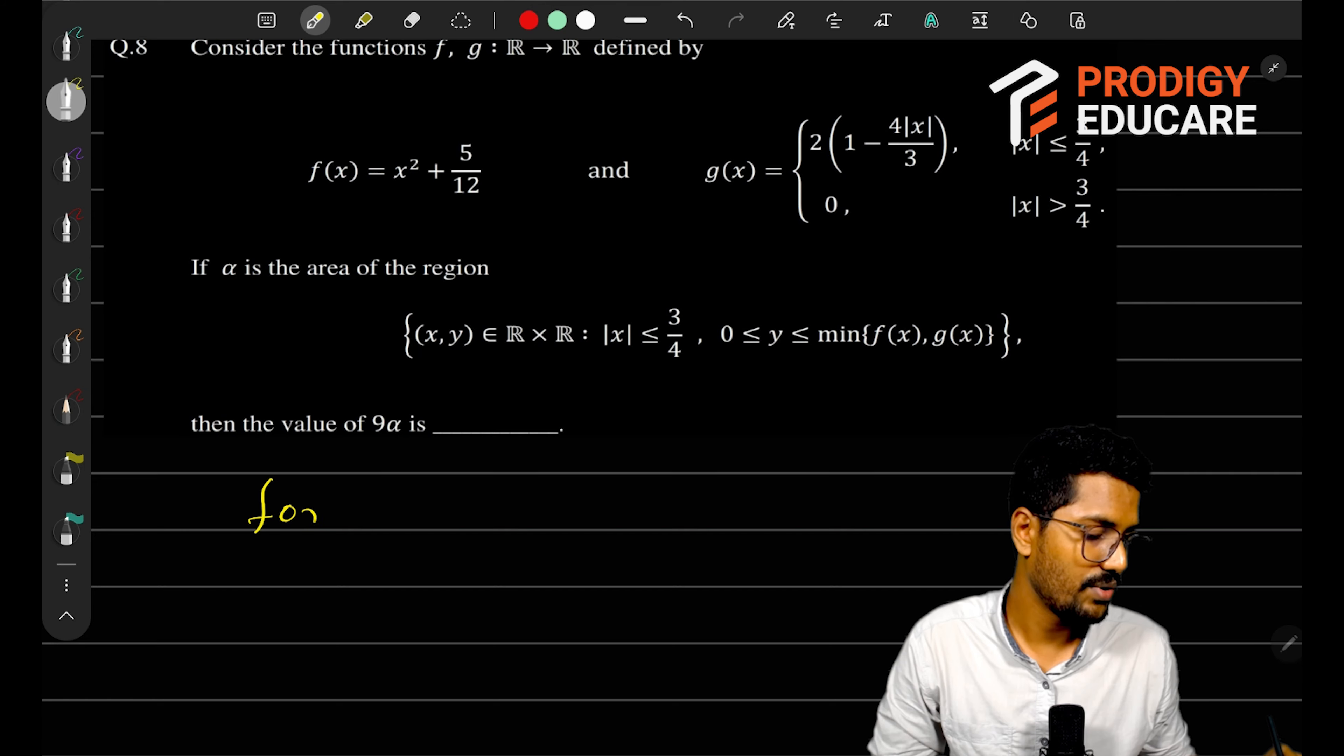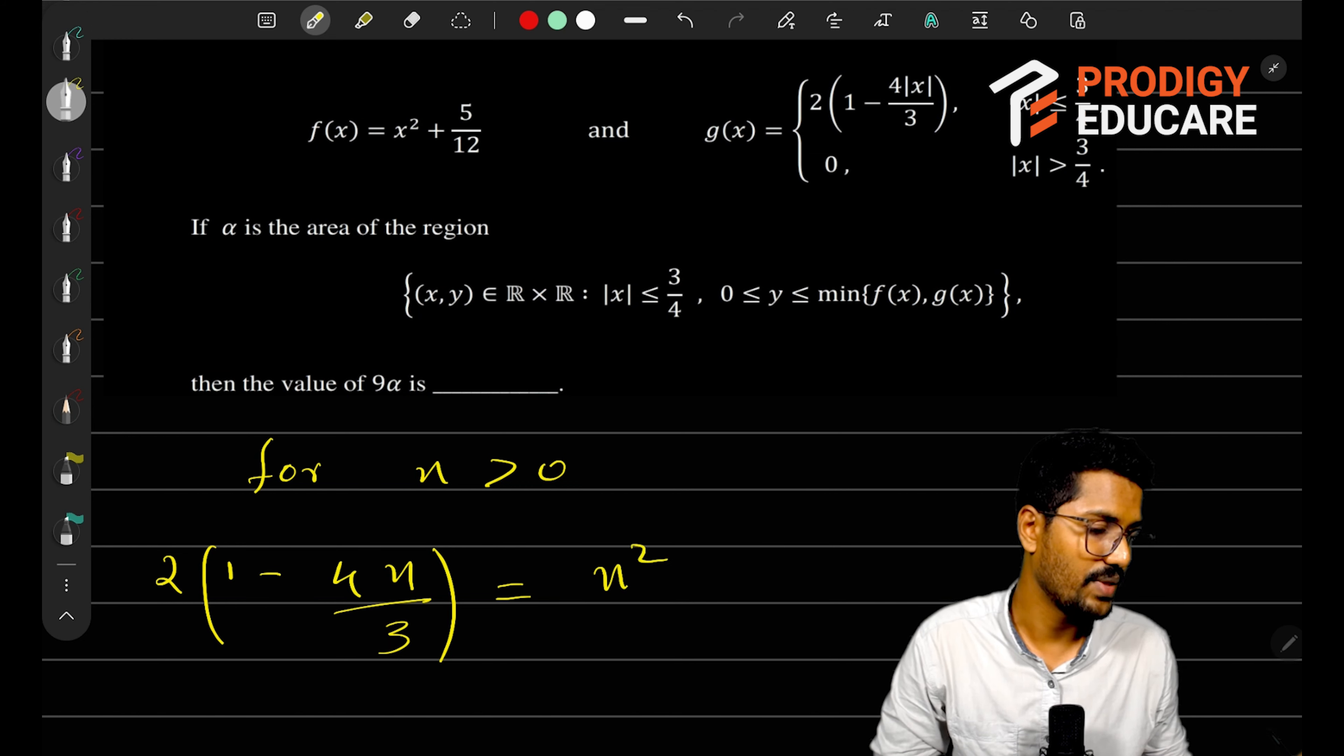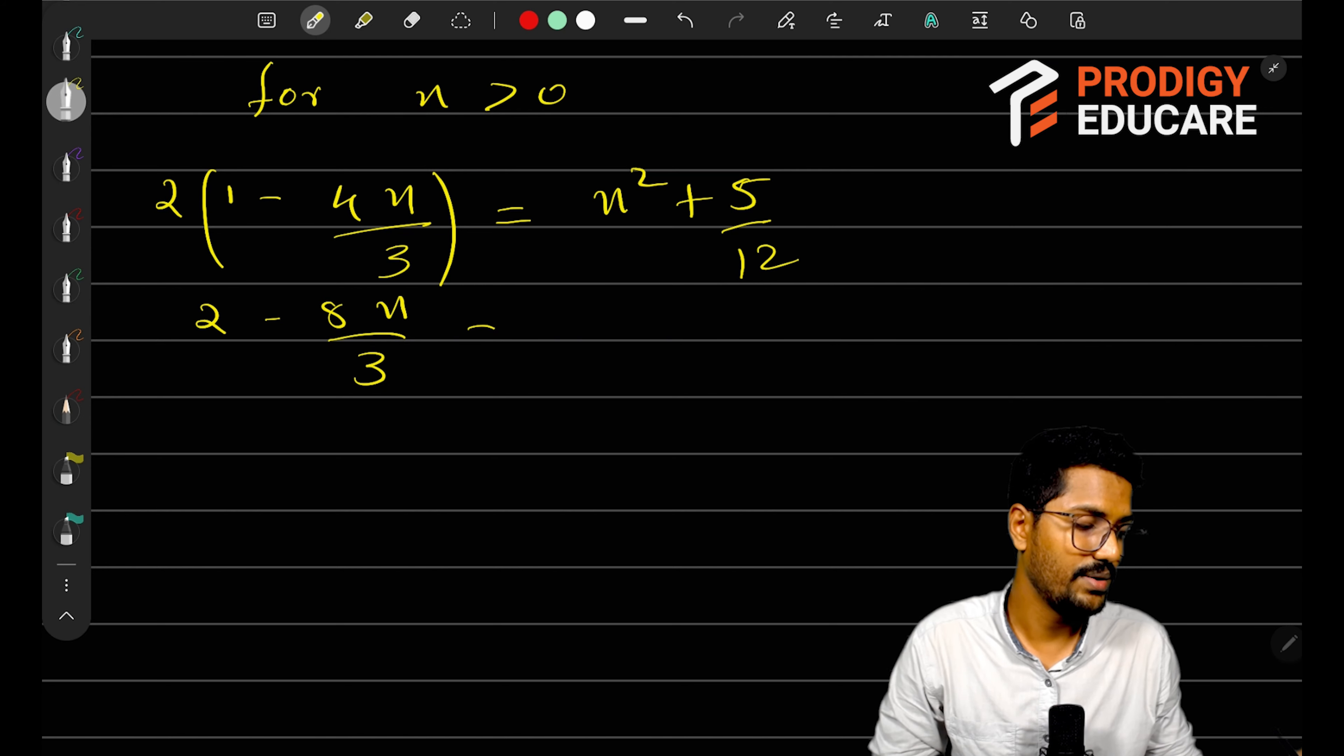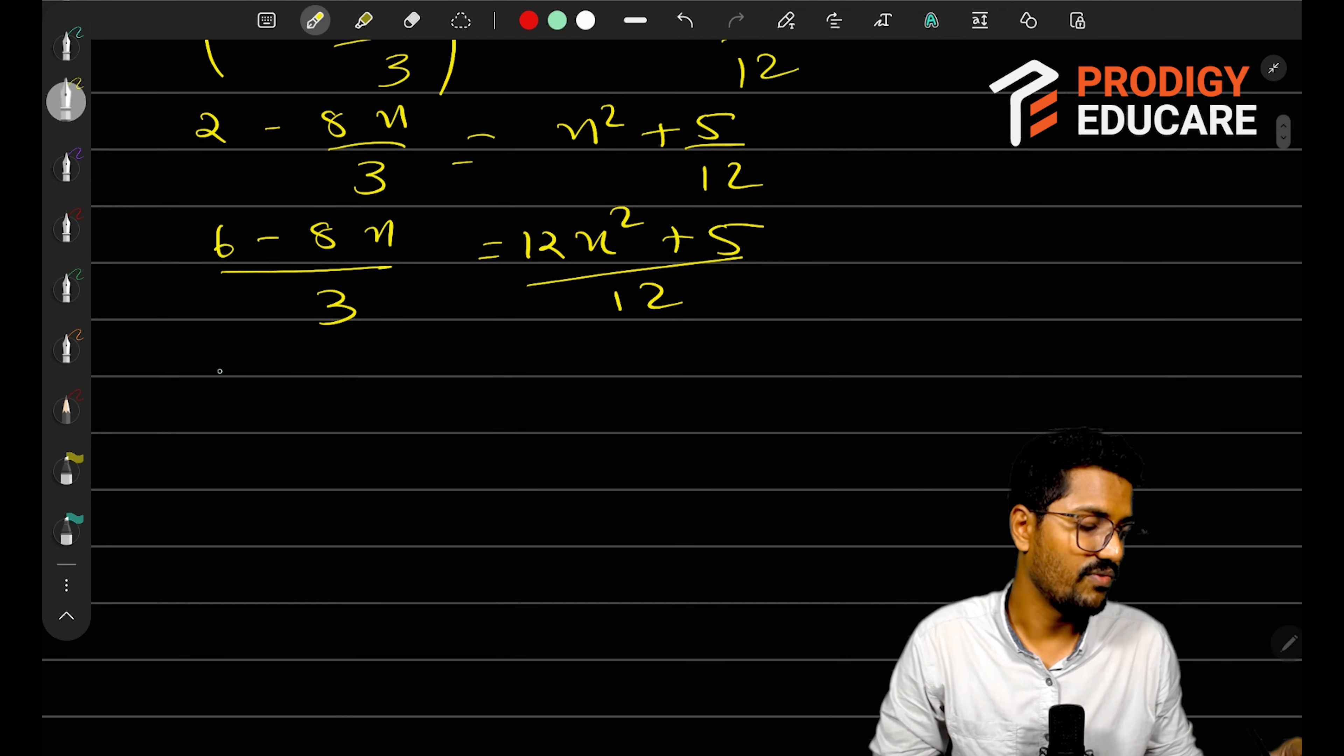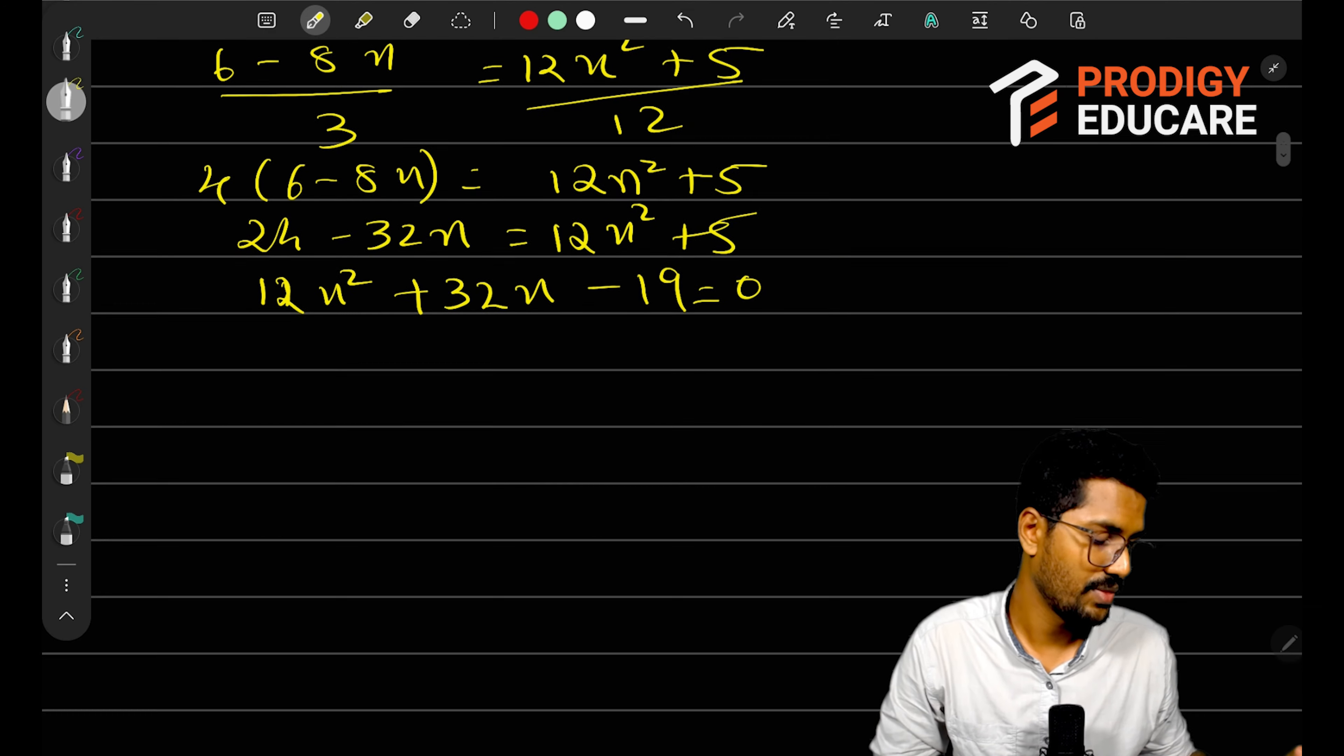For x greater than 0, 1 minus 4x/3 the whole squared should equal x² + 5/12. If I solve this, I will get 2 - 8x/3 equals x² + 5/12. So 6 - 8x upon 3 equals 12x² + 5 the whole divided by 12. Solving this further, 4(6 - 8x) equals 12x² + 5. So 24 - 32x equals 12x² + 5. Therefore, 12x² + 32x - 19 equals 0.